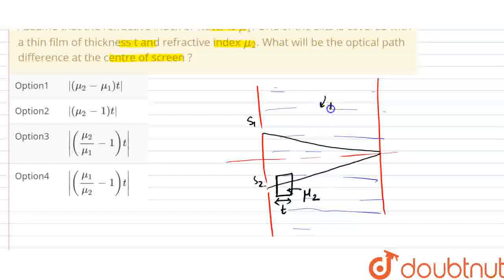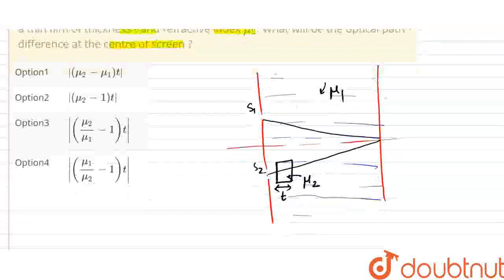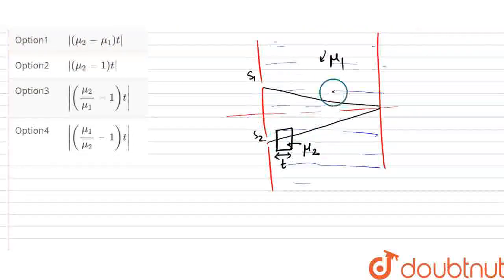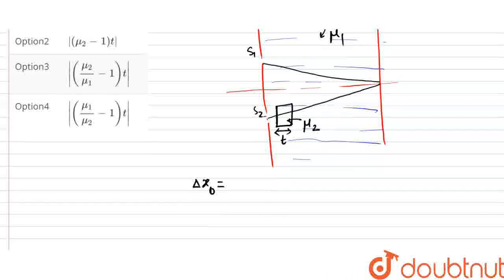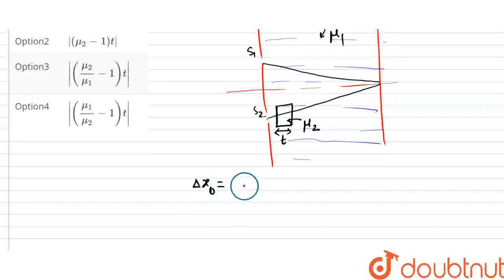the refractive index of surrounding is mu1. So in this situation what will be optical path difference? If there is no medium, just air, if there is air medium, the optical path difference delta x is (mu-1)t. This is the optical path difference.